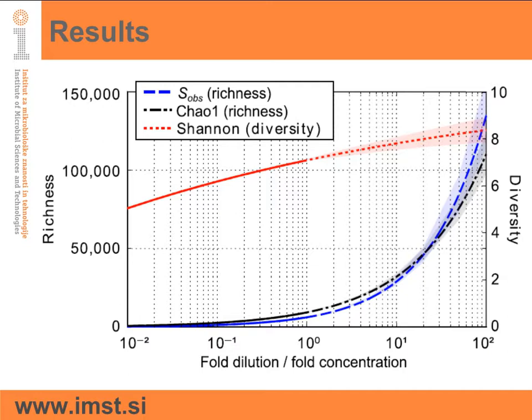Therefore, we examined how the elimination of the smear fraction can affect bacterial analysis based on the 16S rRNA gene. We showed that unnecessary smear elimination can cause a large underestimation of bacterial species richness, such as S-observed and Chao-1 estimators, shown by the blue and black lines respectively, and underestimation of bacterial diversity, determined by the Shannon index, shown by the red line.